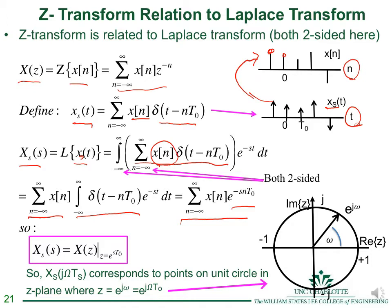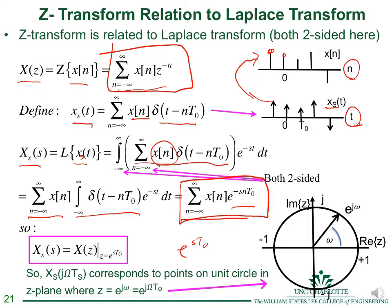We see that the Laplace transform of the sampled signal has the exact same form as the Z-transform definition, if we replace z by e^(sT_0). So the relationship between the sampled spectrum and X(z) is simply found by substituting z = e^(sT_0), and they will be equal.